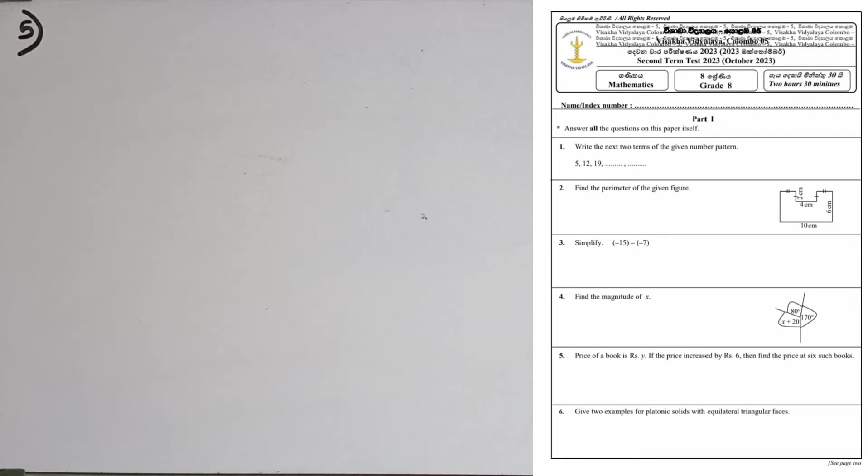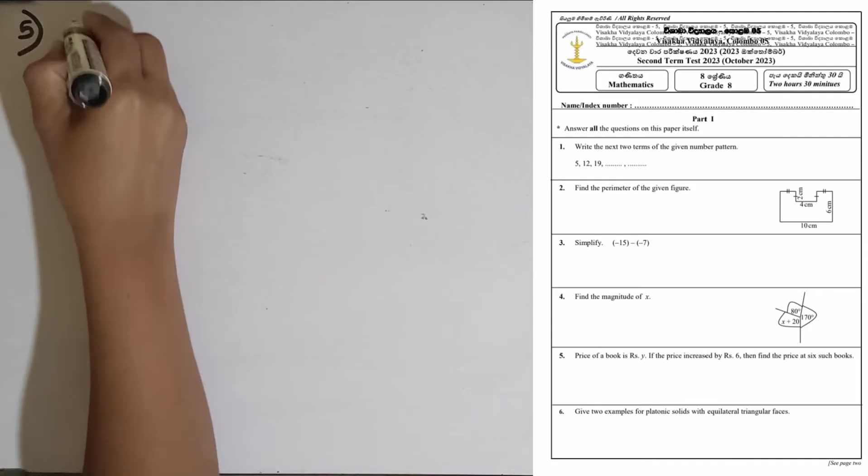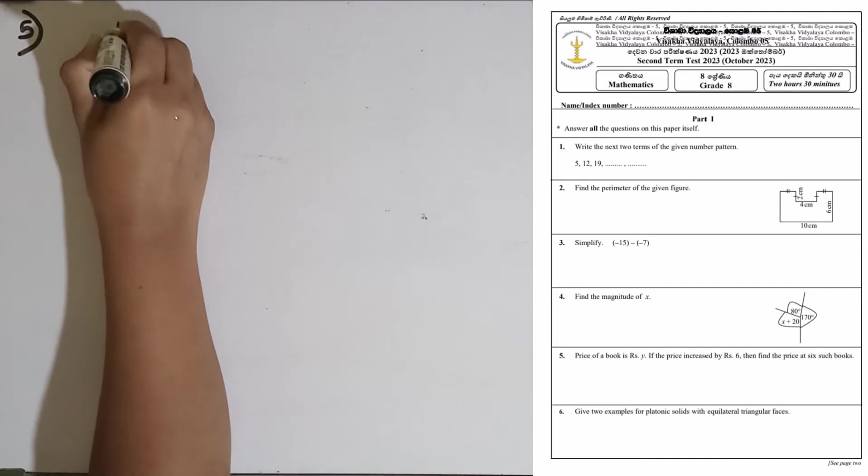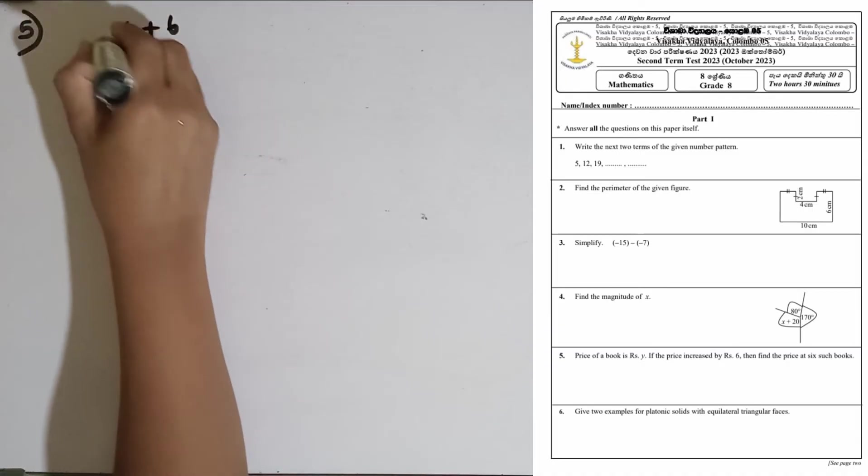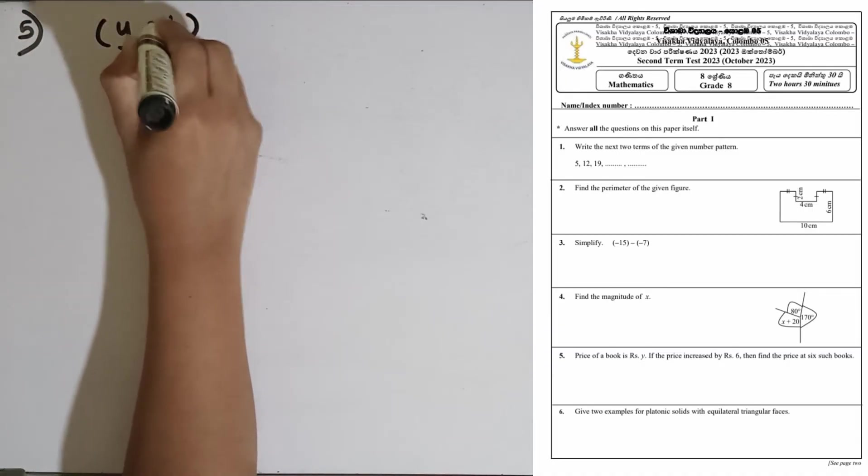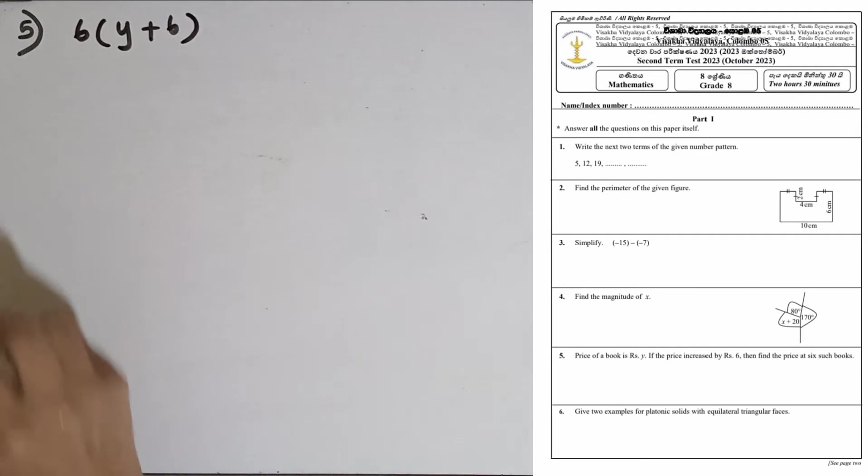Question number 5: Price of a book is y rupees. If the price increased by 6 rupees, then find the price of 6 such books. After the increasement of the price, price of one book is y plus 6 in rupees. To take the price of 6 such books, we have to multiply this by 6.